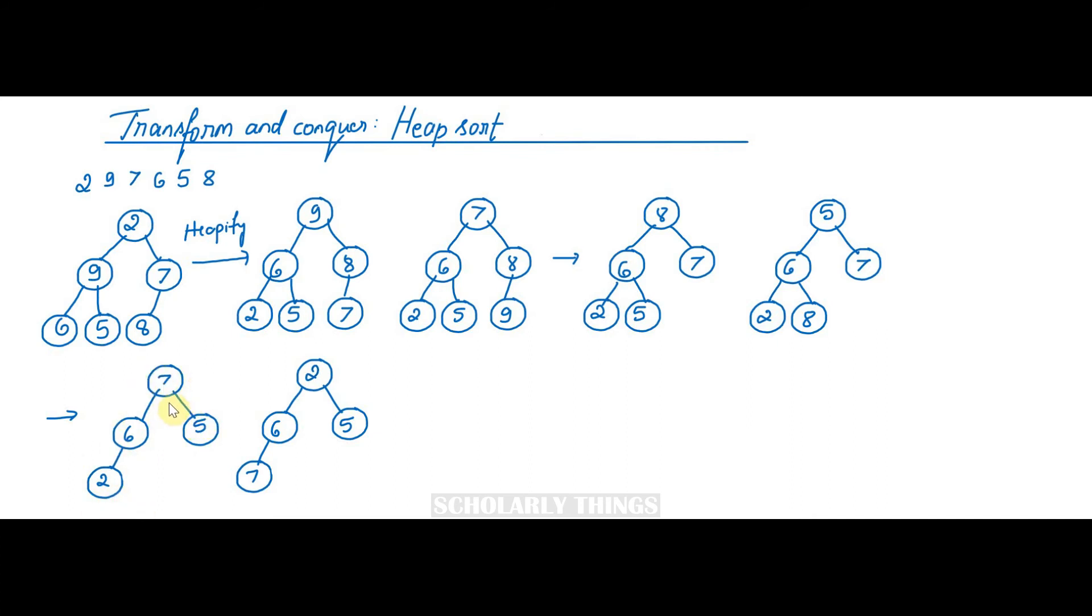Again do maximum key deletion. Consider the root node and the last element. Swap them. 7 and 2 are exchanged. 2 goes here, 7 goes here, and then delete 7 and then reconstruct the heap. Now the heap looks like this.